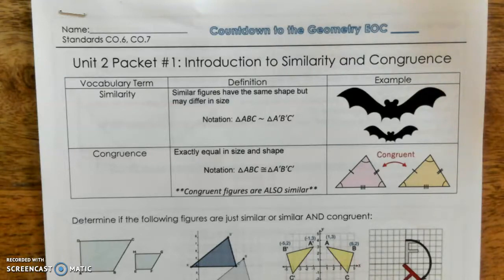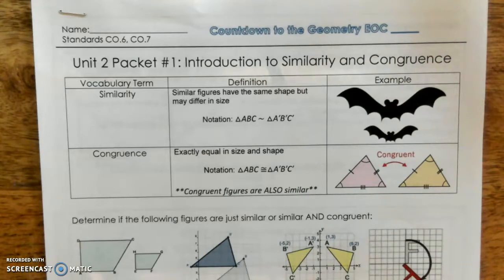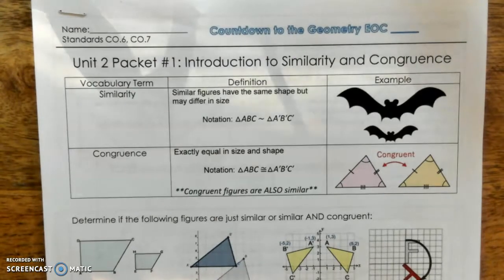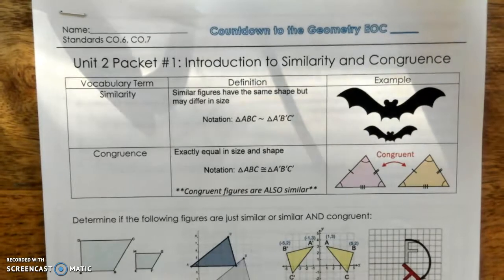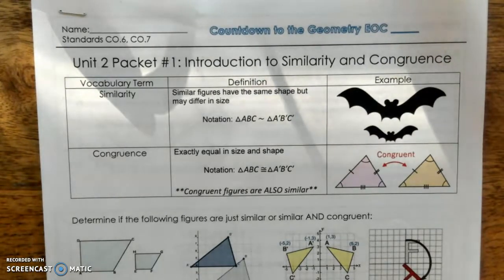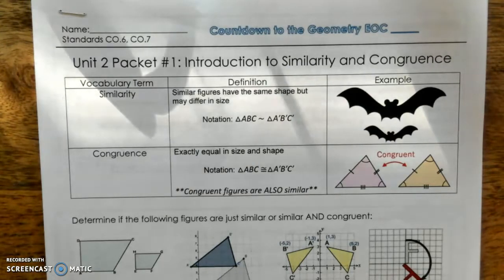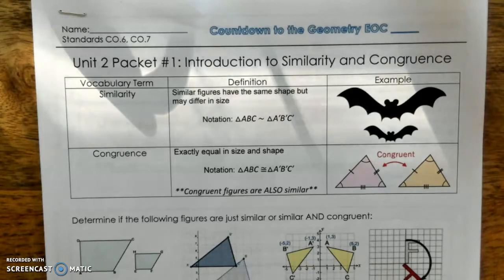Today we're starting Unit 2, Packet 1, Introduction to Similarity and Congruence. We've split Unit 2 into two sections because it's so large. This is actually Unit 2A, and we'll take a test on Unit 2A, and then we'll start Unit 2B. 2A focuses on congruence, and 2B focuses on similarity. In this video, we're going to talk about the differences between the two, but for the first part of the unit, we'll focus on congruence.